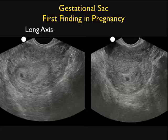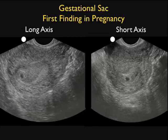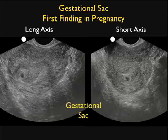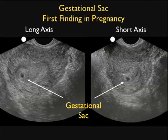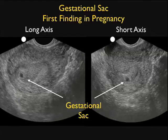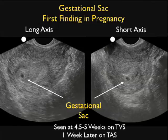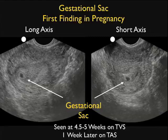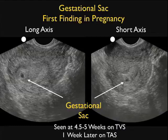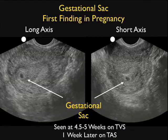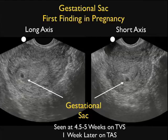Here are two video clips showing the gestational sac in long axis and short axis views. We see a very small diameter gestational sac in both orientations. This can also be seen with a pseudo-gestational sac of ectopic pregnancy, so a small gestational sac like this is in no way diagnostic of an intrauterine pregnancy for the emergency physician sonographer. Remember, the gestational sac is seen at about 4.5 to 5 weeks on transvaginal sonography and about a week later on transabdominal sonography.